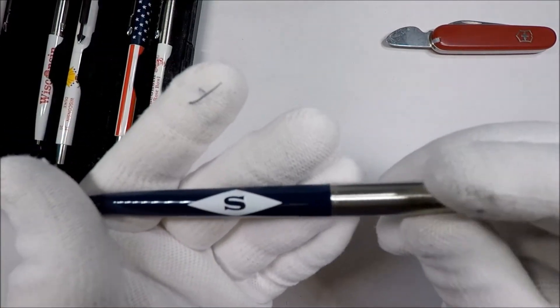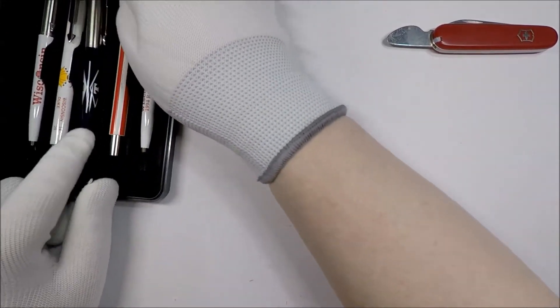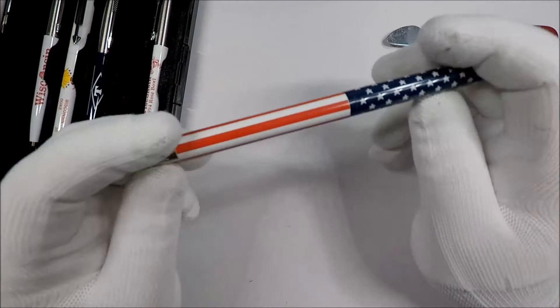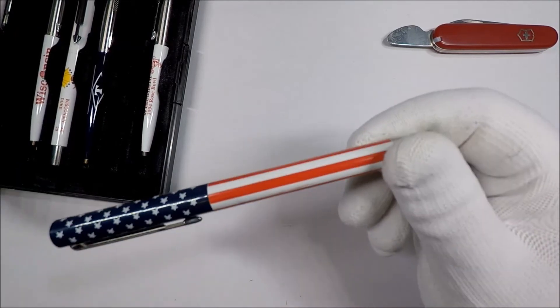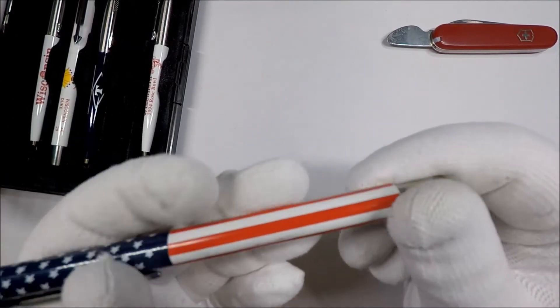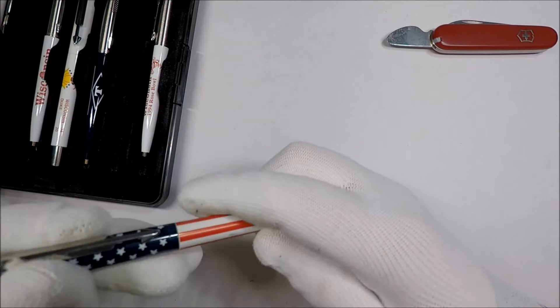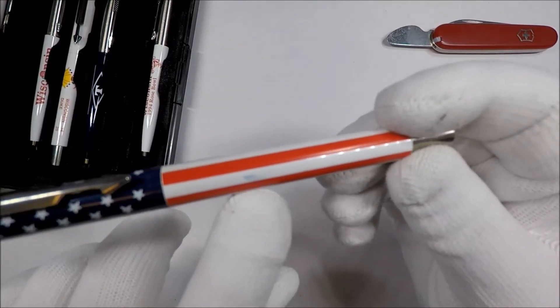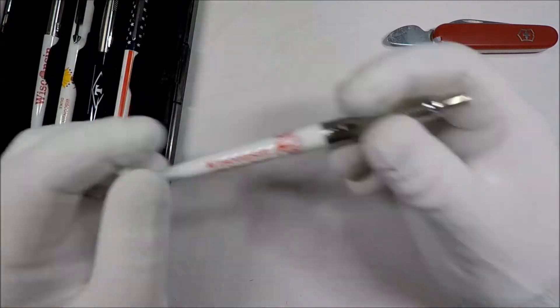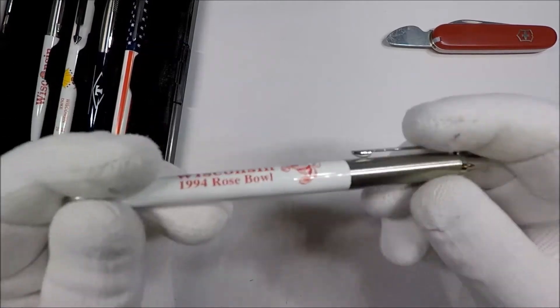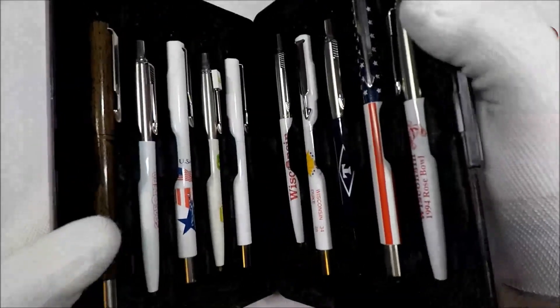I have no idea what ST International is. But another Parker Jotter. And kind of an American flag vector. Although some of the printing is a little off right there. And then another Wisconsin 1994 Rose Bowl pen. Kind of cool. Sort of an interesting little salesman sample set.